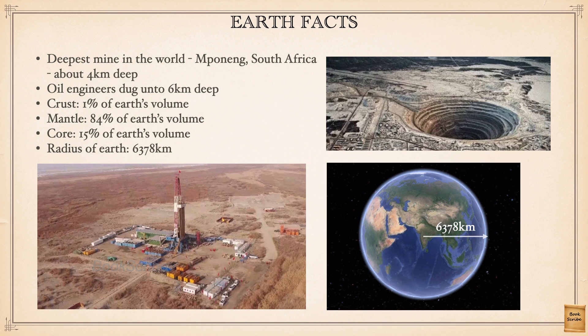We saw three layers — the crust, mantle, and core. Of these three layers, the crust forms just 1% of our Earth's volume. The mantle, which forms the major chunk, is around 84% of our Earth's volume. And the core, the innermost part, is 15%. The radius of our Earth is 6378 kilometers — so to reach the center of our Earth, you would have to dig more than 6000 kilometers.